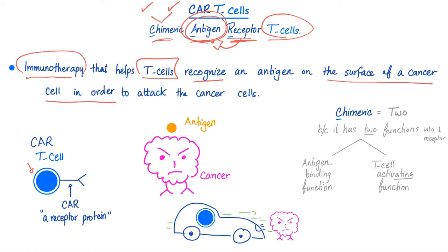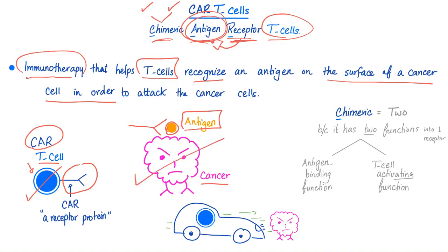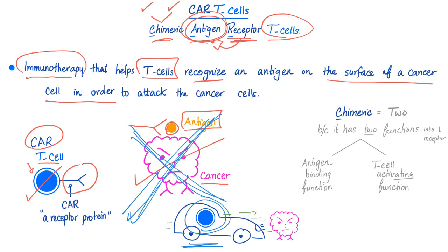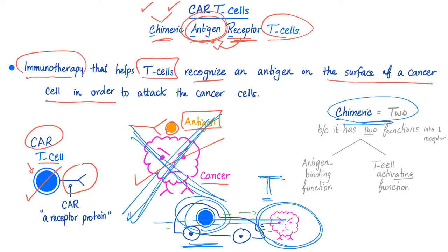So here is your lovely T lymphocyte — this is called T-cell. Now add CAR to it. CAR is this lovely receptor and this receptor will recognize the antigen, which is on the surface of the cancer cell. Once the T lymphocyte is able to recognize the antigen on the surface of the cancer cell, rest in peace, cancer — we don't want you. CAR T kills tumors. The CAR is destroying the tumor. Chimeric means two because CAR T has two functions: it has an antigen binding function and a T-cell activation function.